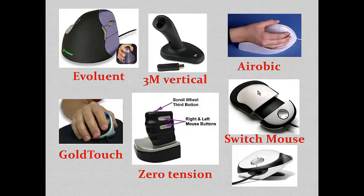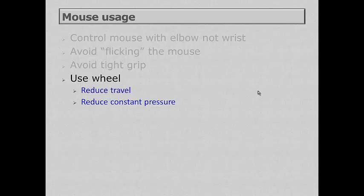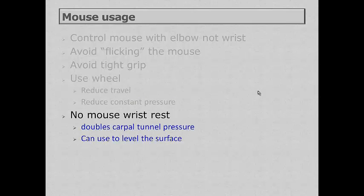There are a number of ergonomic mice on the market — they all try to eliminate or reduce pronation, provide a wide area to grip, and many reduce the effort required to push the buttons. When using a mouse, control it with your elbow and not your wrist, avoid flicking the mouse, and avoid a tight grip. Use the mouse wheel if possible, as it reduces the amount of time and arm travel needed to navigate the screen and reduces constant pressure on the mouse. Be careful about using wrist rests with a mouse — it can double carpal tunnel pressure, though it can be helpful to bridge a gap where the surface level changes slightly.